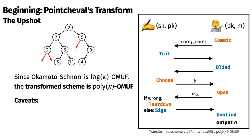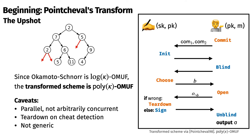Some downsides of this scheme include the fact that it doesn't permit arbitrary concurrency. Rather, it only permits parallel execution, which is a weaker notion. Also, this requires a full teardown for every caught cheater, which can be annoying and costly to implement in practice. Finally, this transform is not generic. Poincheval only states the transform in terms of the Okamoto-Schnorr blind signature scheme.